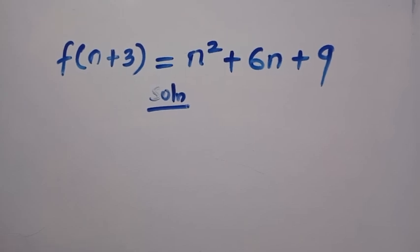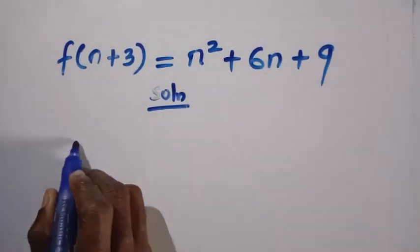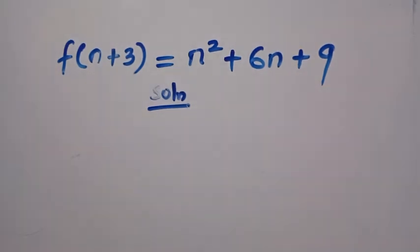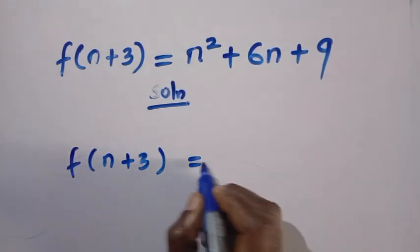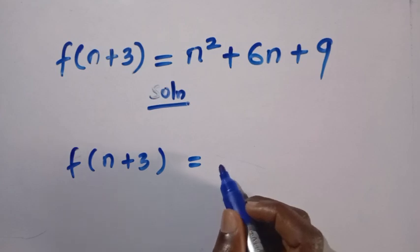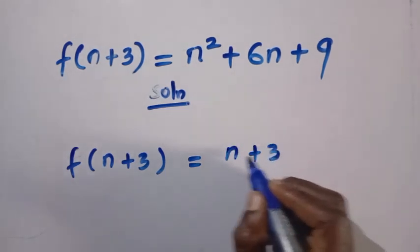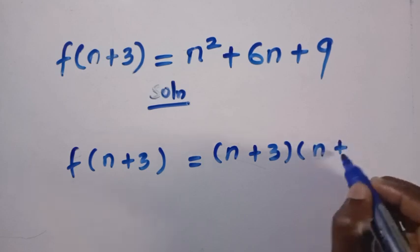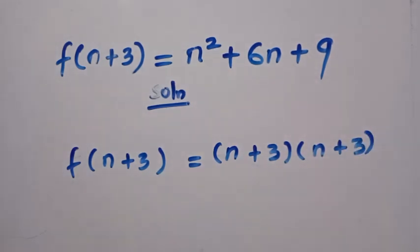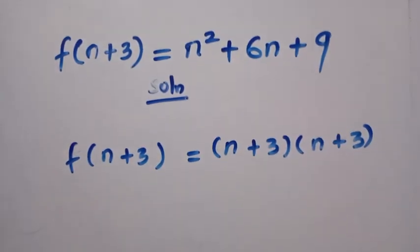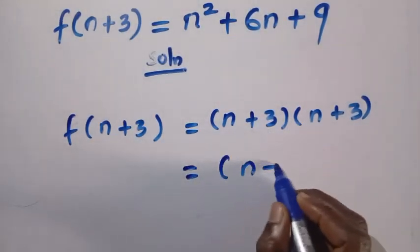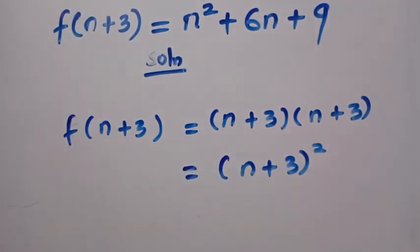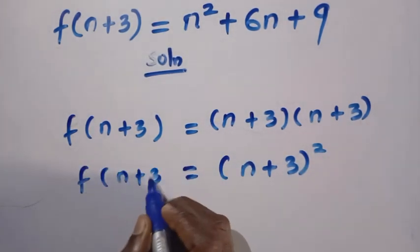When we look at the right-hand side, we have a quadratic. So if we have f(n+3), this equals n² + 6n + 9, which is given as (n+3) multiply by (n+3). So this is what we have for it. We expand this, we get n² + 6n + 9. And since this is doubled, we can simply write it as (n+3)².